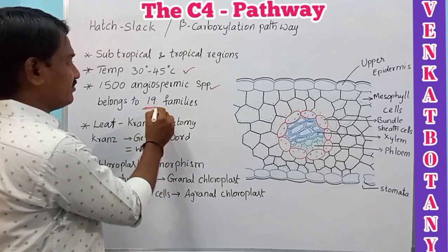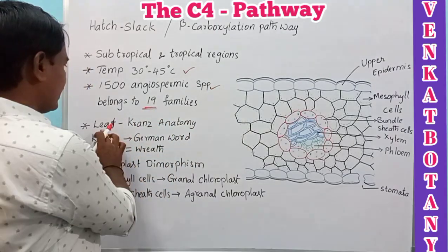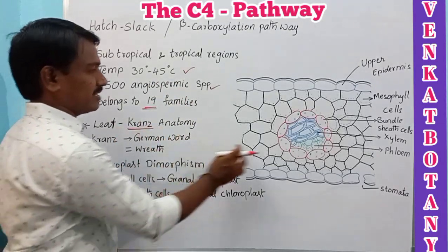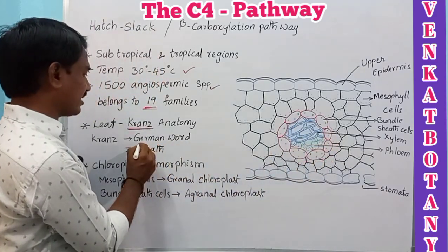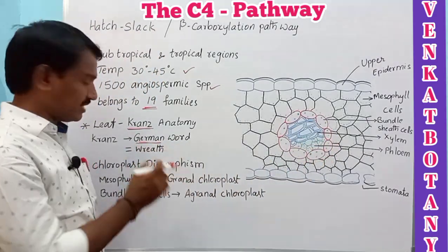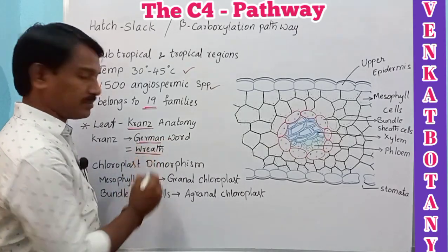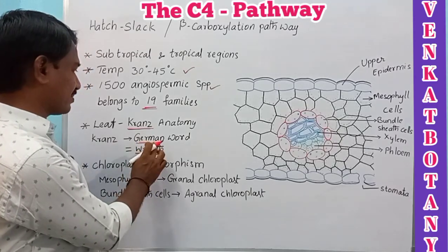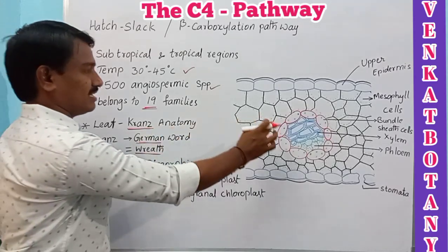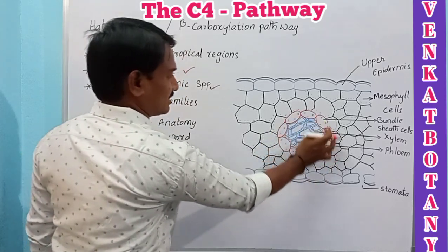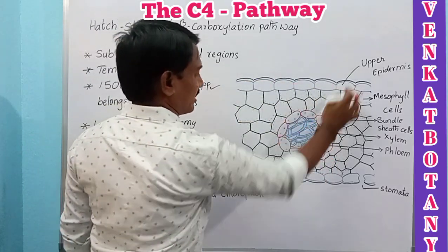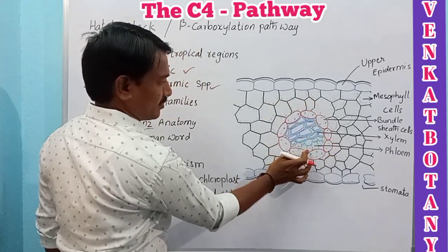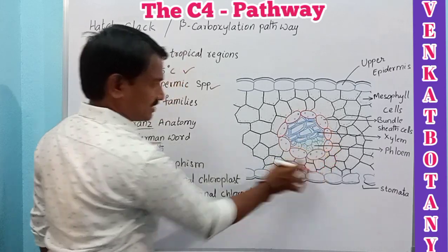In C4 plants, the leaf shows Kranz anatomy. 'Kranz' is a German word meaning a wreath or garland. This refers to the bundle sheath cells present in the leaf structure. The leaf has an upper epidermis, lower epidermis, mesophyll cells, and bundle sheath cells surrounding the xylem and phloem.